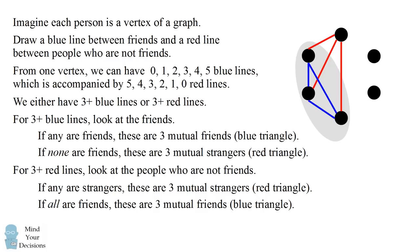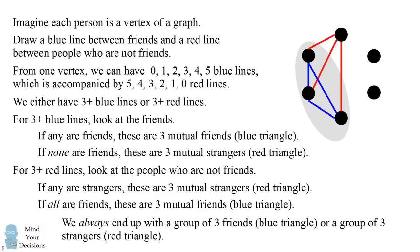So what we've shown by considering these two cases is that no matter how we draw this graph, no matter how these six people are friends or not friends, we always end up with a group of three people who are mutual friends—that's a blue triangle—or we have three people who are mutual strangers, which is a red triangle. It's always going to be true.